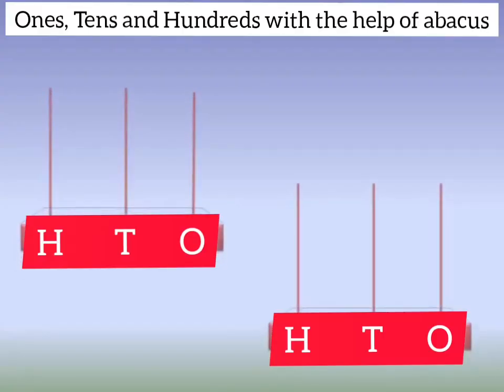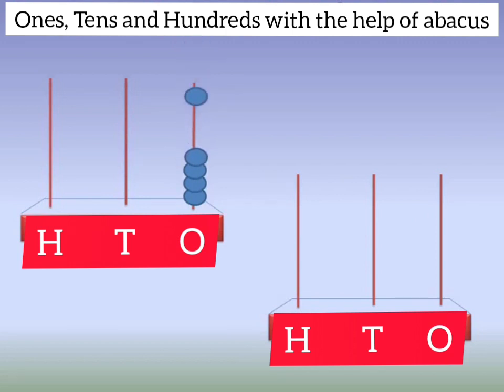Now let's learn these concepts with abacus. Put the beads in one's rod of this abacus: 1, 2, 3, 4, 5, 6, 7, 8 and 9. These are 9 beads. We can put only 9 beads and the 10th bead falls down.